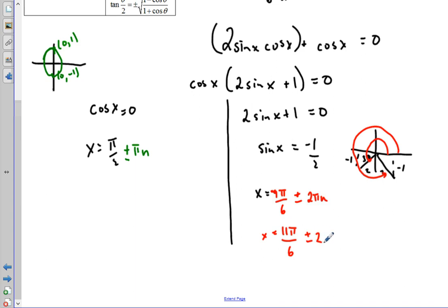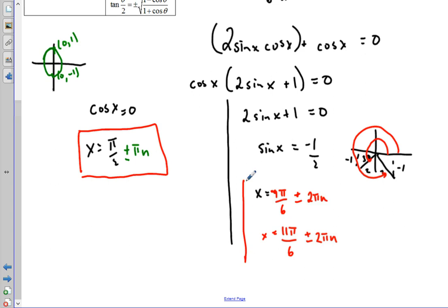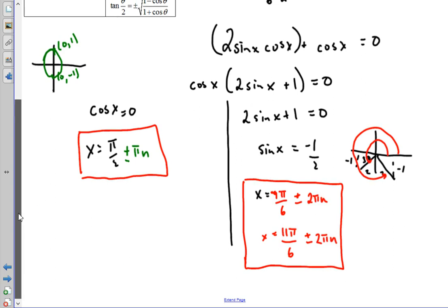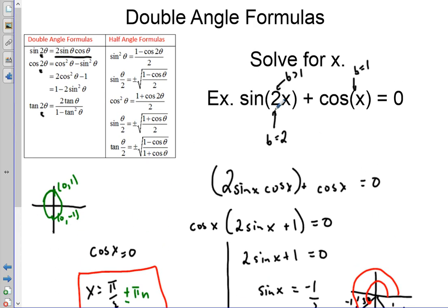So our complete solution set is: x equals π/2 plus or minus πn, and then x equals 7π/6 plus or minus 2πn and 11π/6 plus or minus 2πn. That is how you use the double angle formula. You know to use it when you see a b value of two paired with a b value of one — pull out your chart, substitute, and simplify.